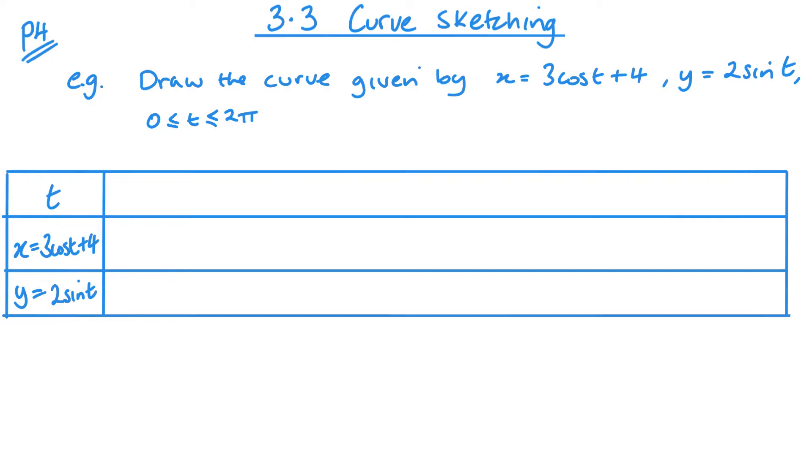Here I have my table with t, x, and y down the side. I need to think of values of t. I need to go between zero, which will be my first value, and two π, which will be my last value. I want to just spread them out, so I could just think of nice values to go up in.